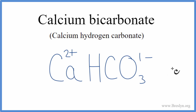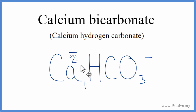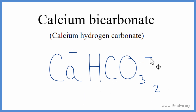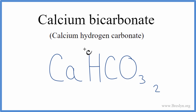Because it's ionic, these charges should add up to 0, but they don't. So we change the subscripts using the crisscross method — we move the 1 over and the 2 over. We don't write the 1 by convention. We also need to put parentheses around our polyatomic ion since we have two of these hydrogen carbonate ions. That gives us the formula for calcium bicarbonate, or calcium hydrogen carbonate.